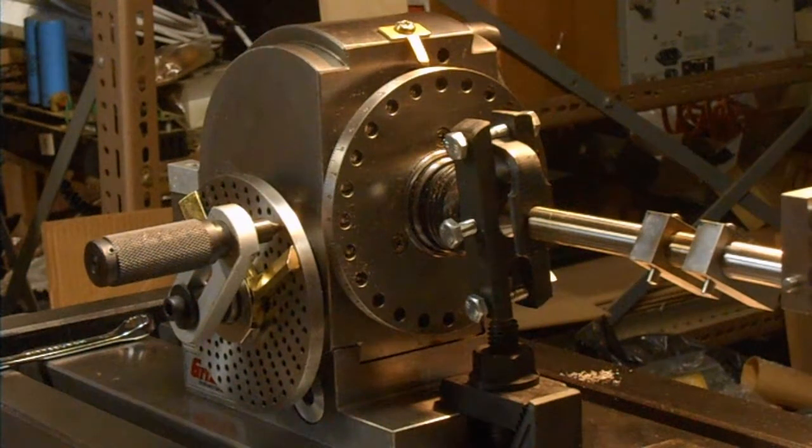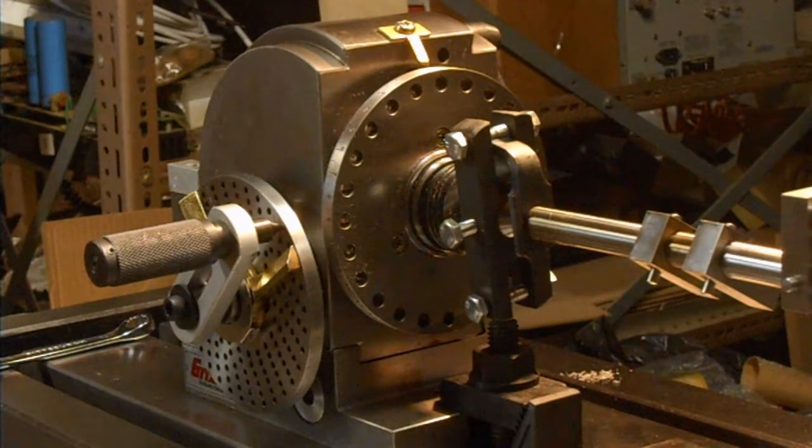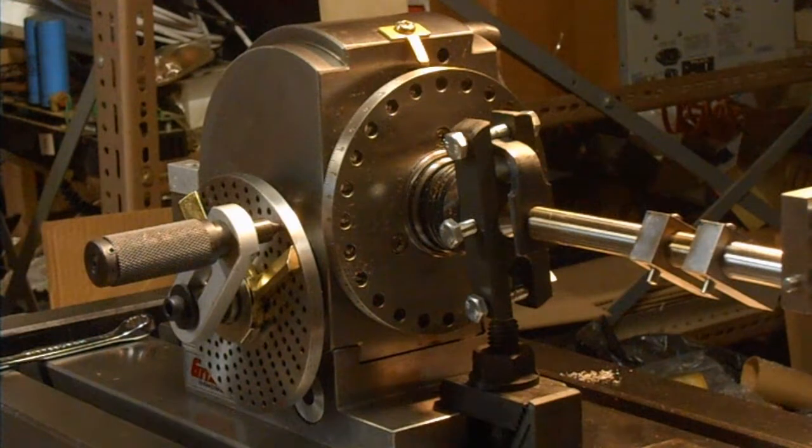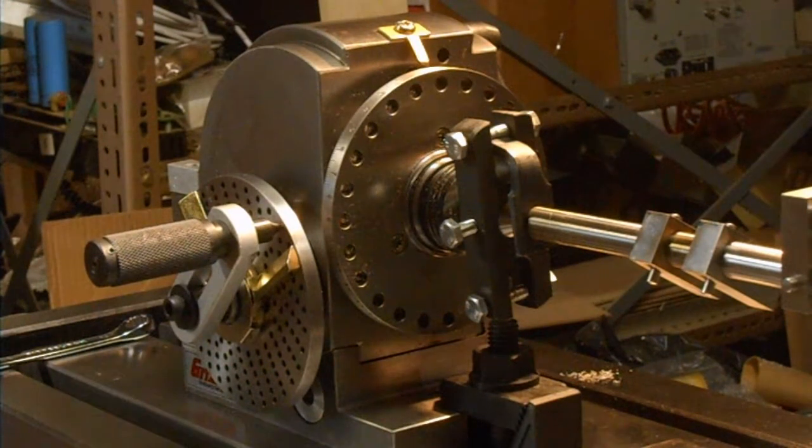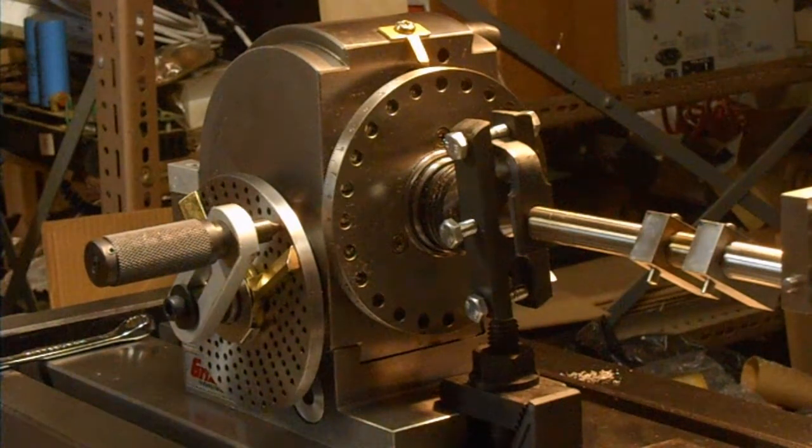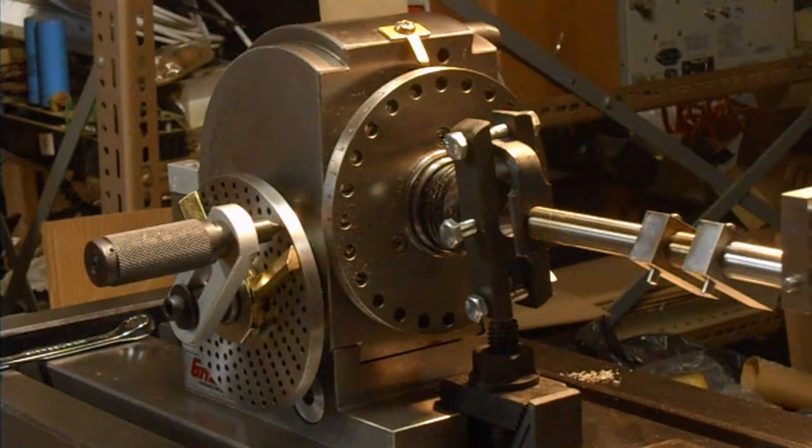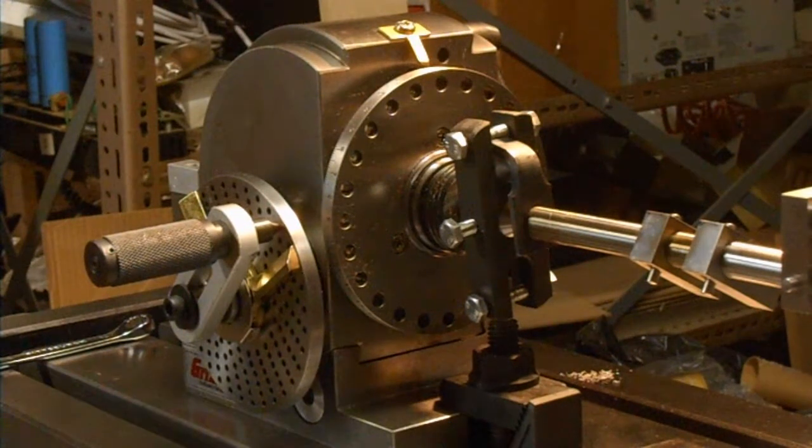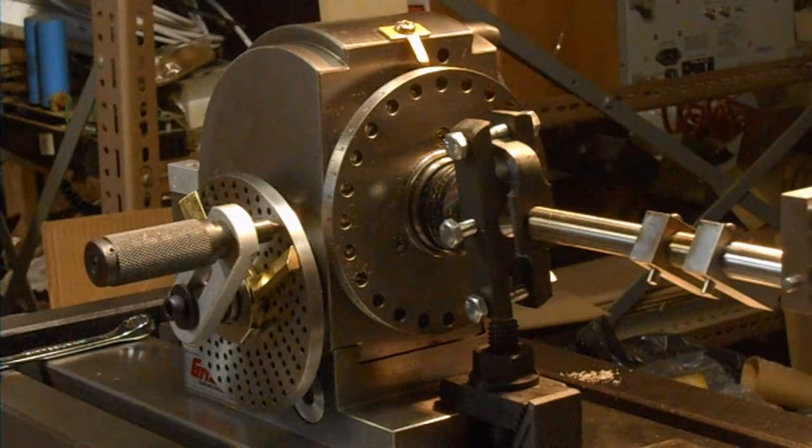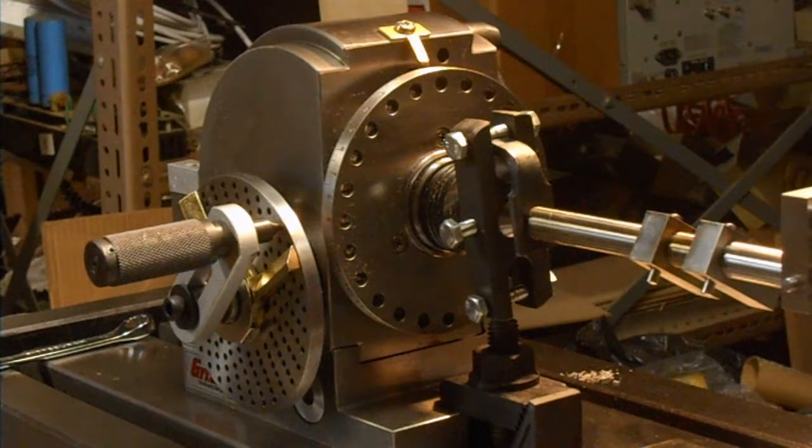Okay. Here we are. This is my dividing head. This is one I inherited. It is a very handy tool for getting precise degrees. You can turn it to a certain number of degrees as a rotational part. You'll see how I do that here in a moment. Even fractions of degrees. So, it's a valuable thing. This crankshaft that I've got mounted in it now is my new one. It is not the reject that I was just showing you. This is a new one.